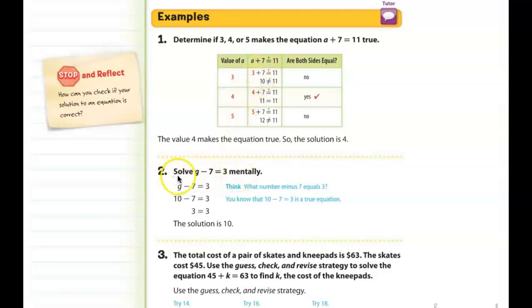So now it's asking you to solve G minus 7 equals 3 mentally. So you ask yourself, if I have a number and I take away 7 from it, and the answer is 3, what was that original number? So what number minus 7 equals 3? Now you can also work backwards. So if this is subtraction, you can think, 3 plus 7 equals what number? And that number is 10. So 10 minus 7 equals 3. That's correct. So the solution would be 10.